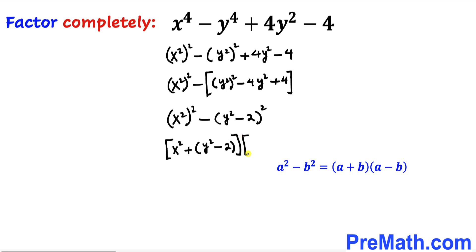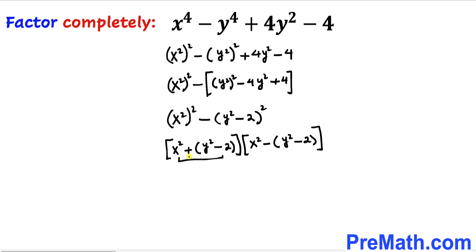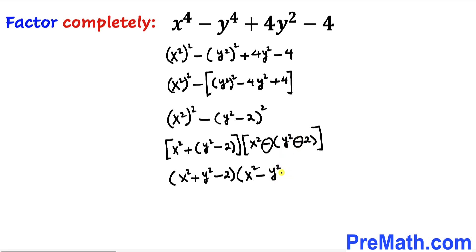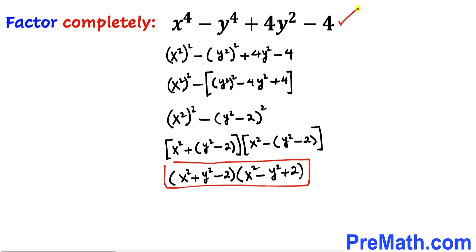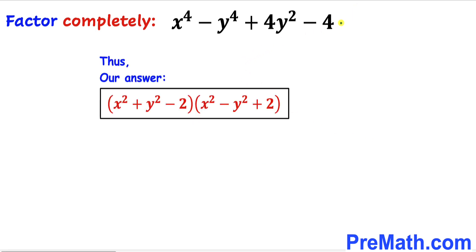Multiplied by (x square minus (y square minus 2)). Focusing on the second bracket: we have a minus sign outside, so y square stays and negative becomes positive 2, giving x square minus y square plus 2. These are our complete factors. So after all the manipulations, the complete factors are (x square plus y square minus 2) times (x square minus y square plus 2), and that's our final answer.